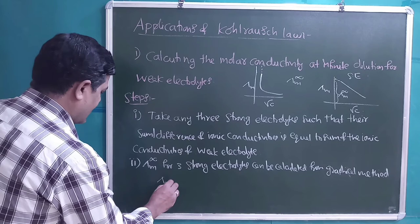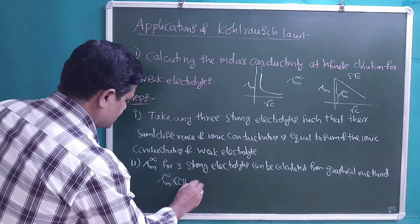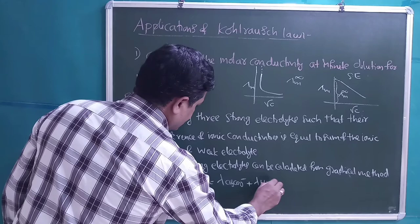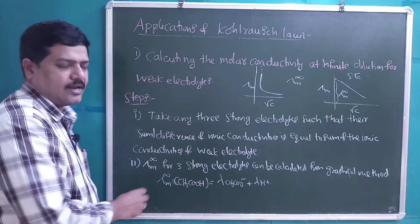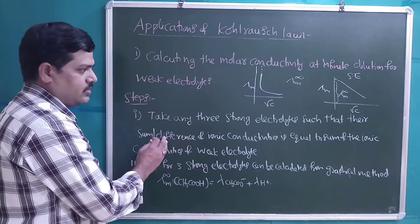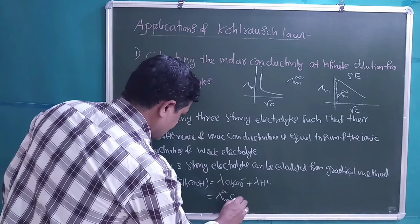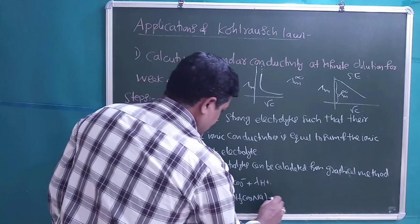For example, if you need to calculate λ°m for acetic acid (CH₃COOH), we write it as the sum of ionic conductivities of the acetate ion plus the H⁺ ion. We need to choose any three strong electrolytes such that the difference of their ionic conductivities equals the sum of the ionic conductivities of acetic acid.